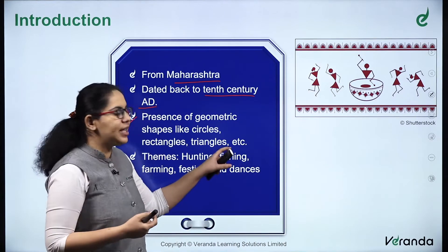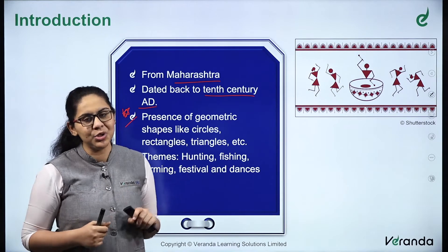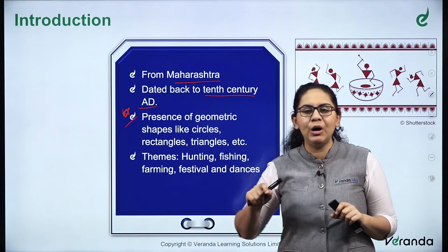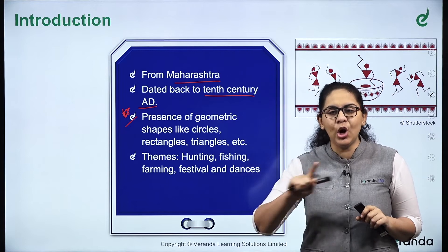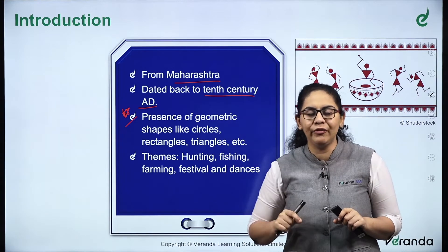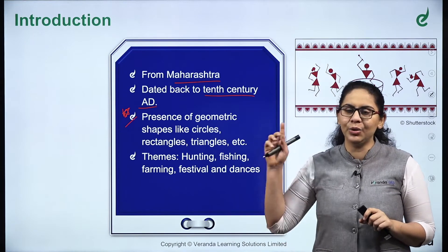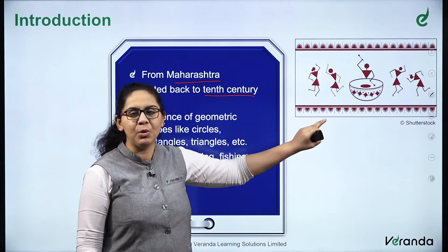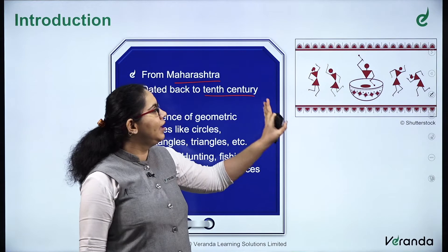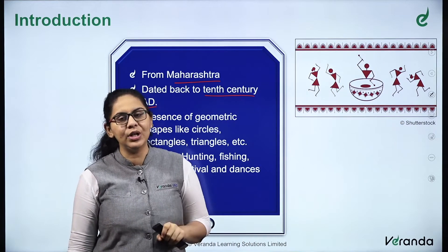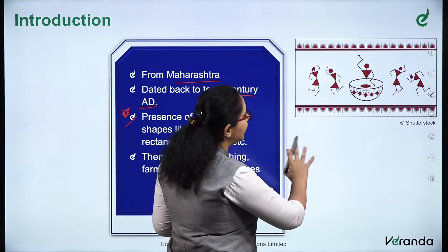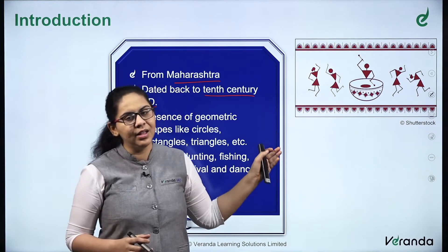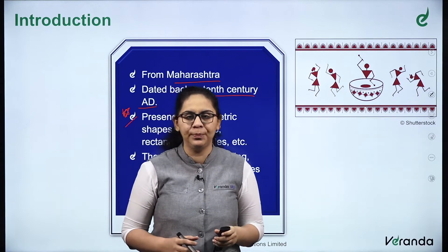This is similar to the case of cave paintings. When man did not know how to write, he drew the figures he saw. Hunting scenes are very common in ancient paintings. Here is a demonstration of a Varli painting: in this painting, geometric shapes are dominant. It depicts a celebration where one person is beating a drum and others are dancing. You can see both the theme and the use of geometric shapes clearly.